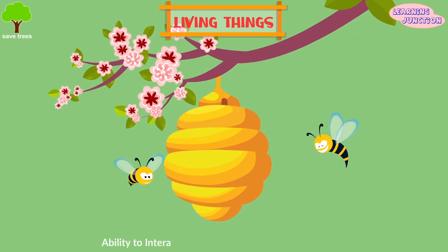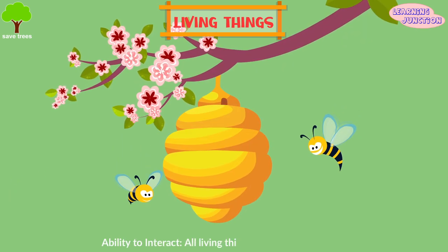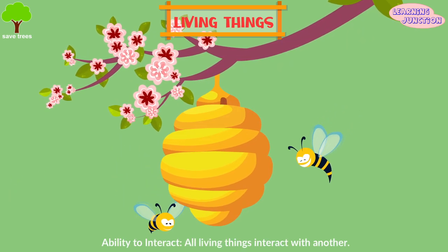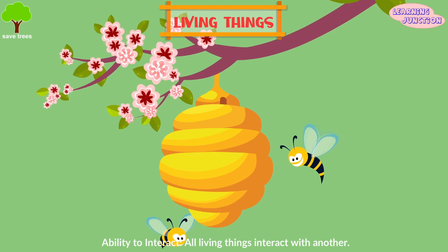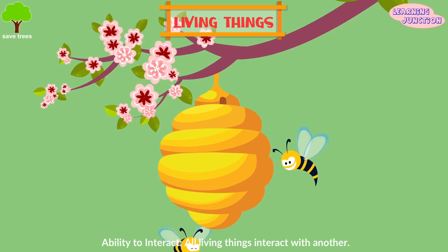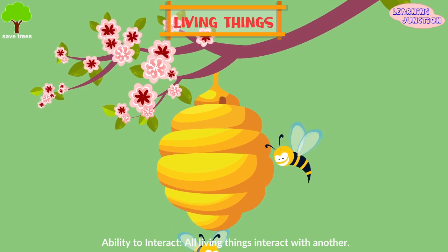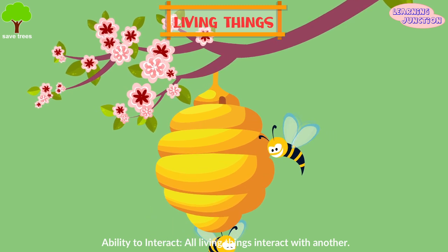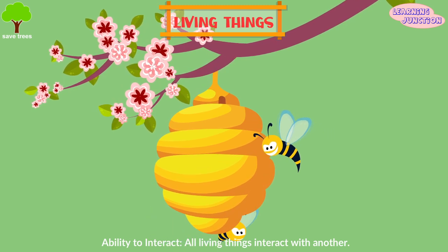Ability to interact. All living things interact with another. For example, flowers interact with bees by releasing pollen for it.